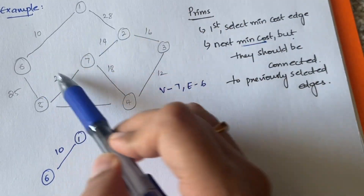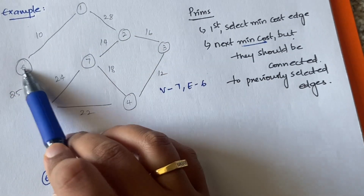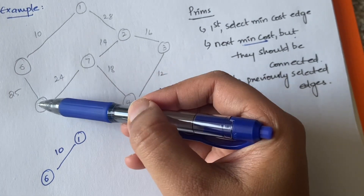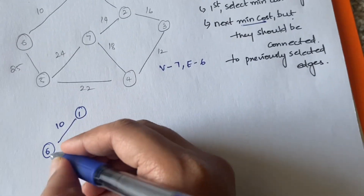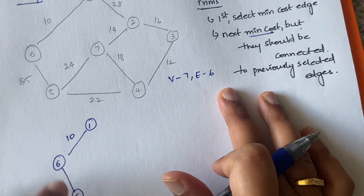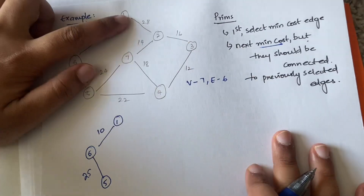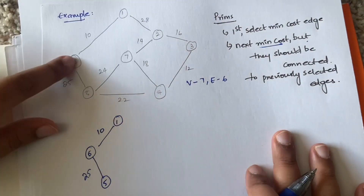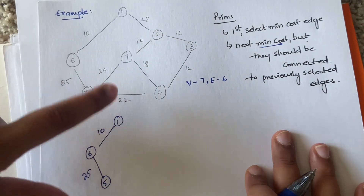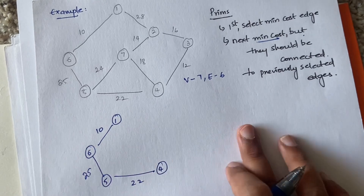Now from vertices 1, 6, and 5, check what edges are going out. From vertex 1 we have 10 (already selected) and 28. From vertex 6, costs 10 and 25 are both done. From vertex 5 we have edges of cost 24 and 22. Among 28, 24, and 22, the smallest is 22, so select the edge with cost 22.